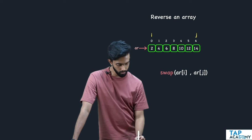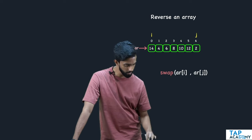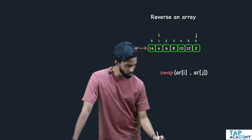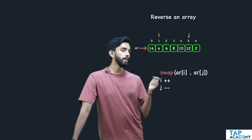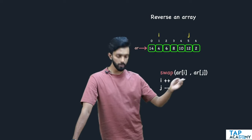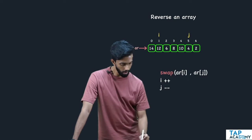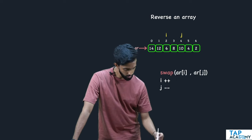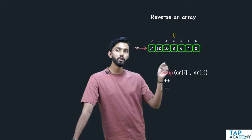If I swap them, then 2 and 14 will get swapped — 14 will come here, 2 will come here. But it's not completely reversed, so I'll move i forward and j backwards. Your code should be: i++, j--. Increment i, decrement j. Again swap, so now 4 and 12 will get swapped. After that, increment i, decrement j, again swap — so 6 and 10 get swapped.